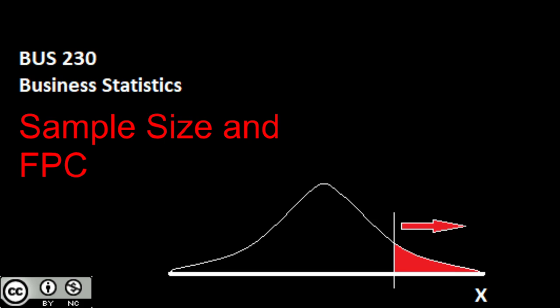The Finite Population Correction Factor is not to be confused with the continuity correction factor we used in our binomial approximation — that's a very different situation. So let's start off by taking a look at determining minimum sample size.